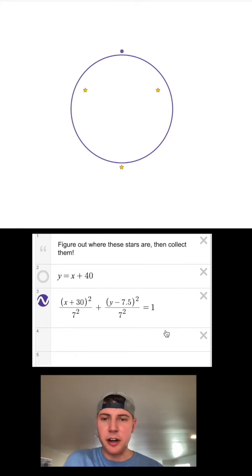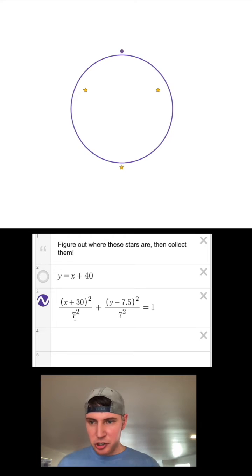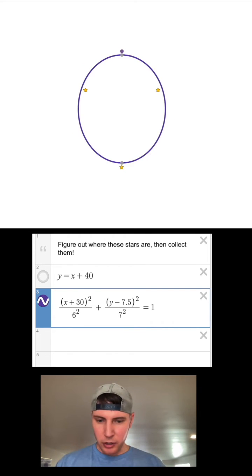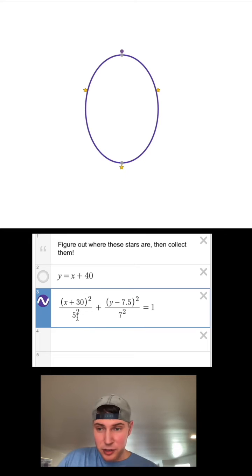If I want to change the width of it, I'm going to shrink this 7 down to a 6, I need to get smaller, 5. So that'll work right there. This has a radius in the x direction of 5 and a radius in the y direction of 7, and it's centered at negative 30, positive 7.5.